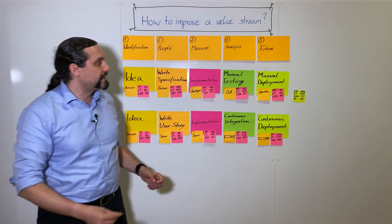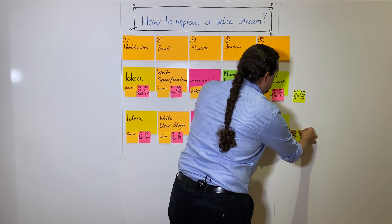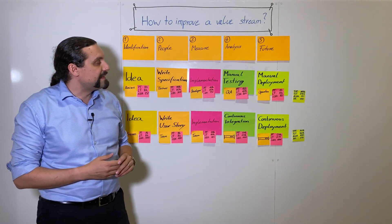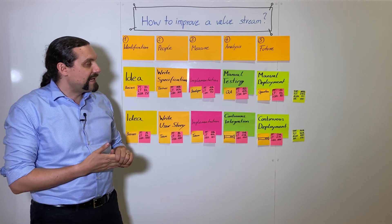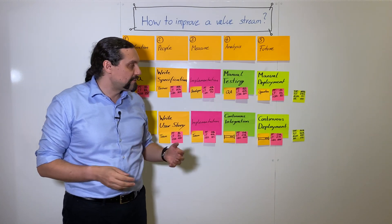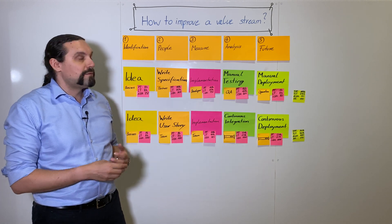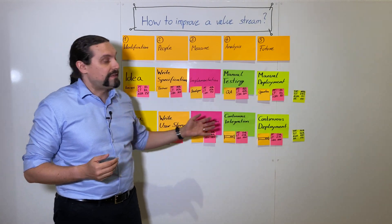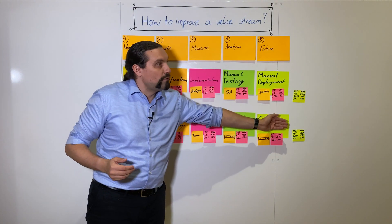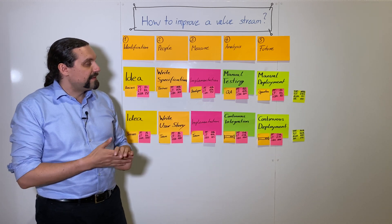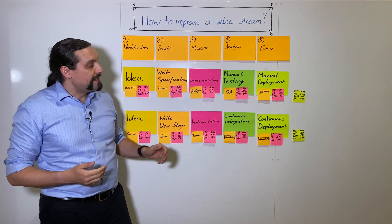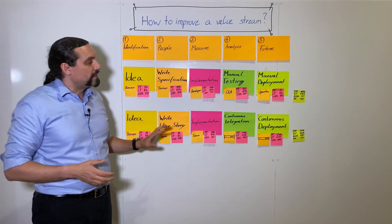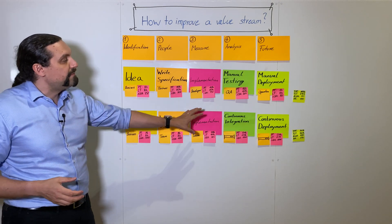Now again we are going to analyze the totals. We see that we have a total process time of 36.2 hours, a total lead time of 56.2 hours, a rolling complete and accuracy of 80 percent — meaning 80 percent of ideas will go directly into production — and the activity ratio is at 64 percent. So this will be our target value stream where we want to go.